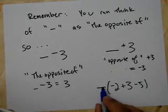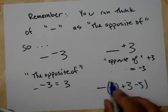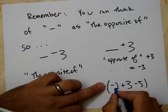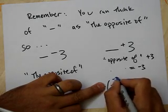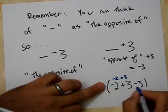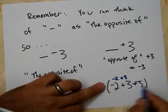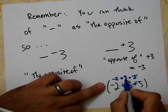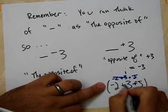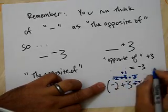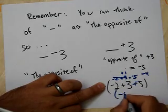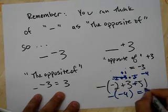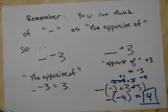So, another example here. I want the opposite of all this stuff. Well, what's all this stuff? I can think of a negative 2 plus 3, plus a negative 5. Negative 2 and 3, I get 1 positive. Positive 1 and negative 5, I get negative 4. Inside here, I have negative 4. This is telling me I want the opposite of that negative 4. Ends up being positive 4.